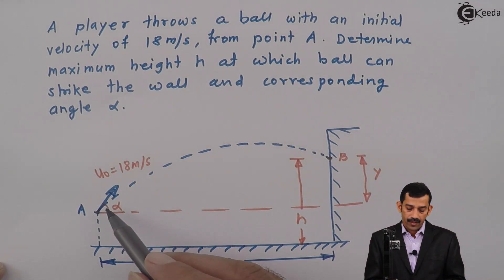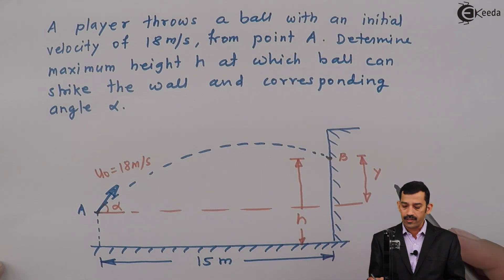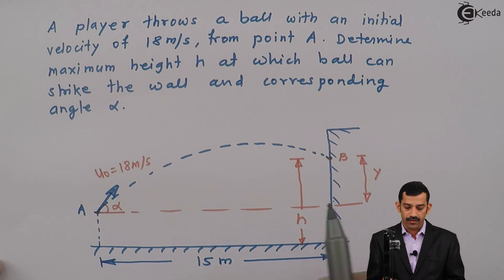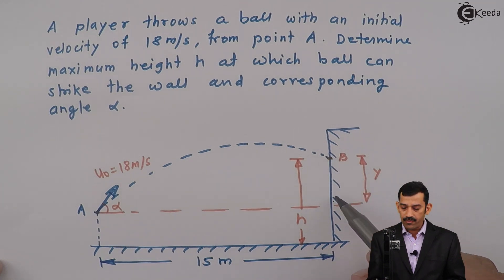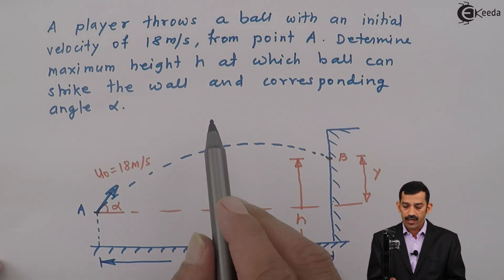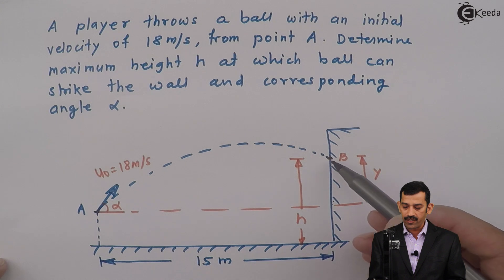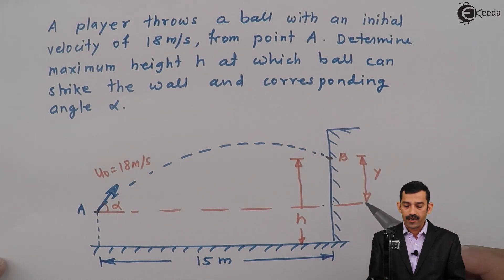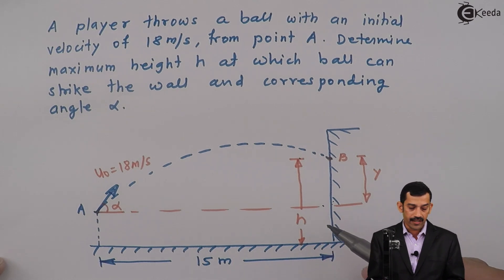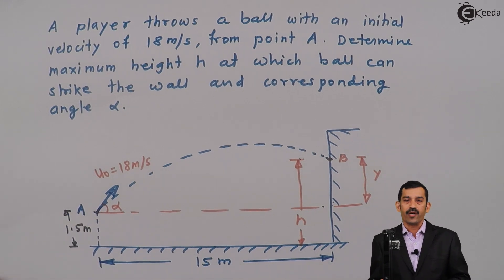As angle alpha varies, the ball strikes the wall at different heights. So y, or h, depends on angle alpha. h must be maximum, and the corresponding angle alpha is unknown. Height h is measured from the ground, and the ball is thrown from a height of 1.5 meters. Therefore, h equals y plus 1.5 meters.